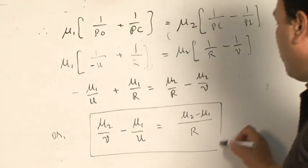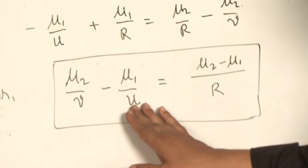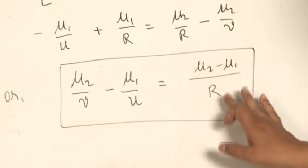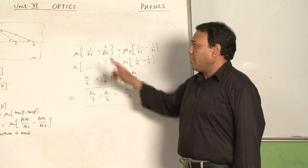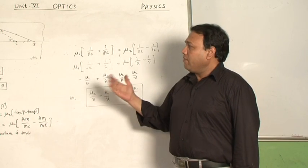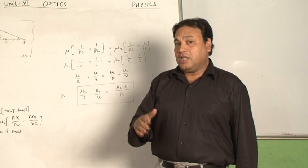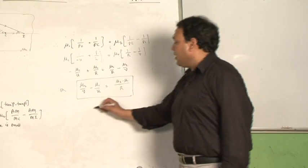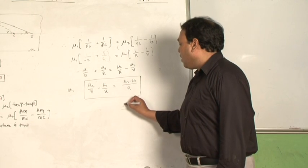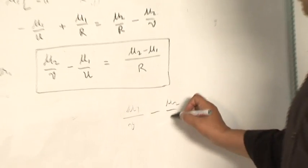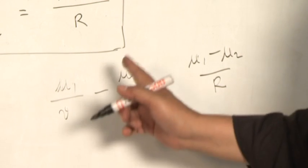This is the final equation representing the relation between the two refractive indices of the media, object distance, image distance, and radius of curvature. This is an important 5-mark question — the question comes like: derive the formula for refraction at a convex spherical surface. Likewise, when the object is in the denser medium and image is formed in the rarer medium, the refractive indices get interchanged, giving: mu 1/V minus mu 2/U equals (mu 1 minus mu 2)/R. Students, please try this derivation at home.